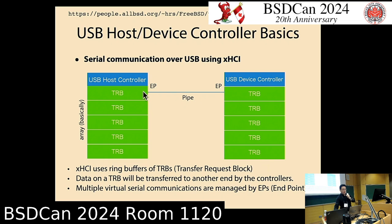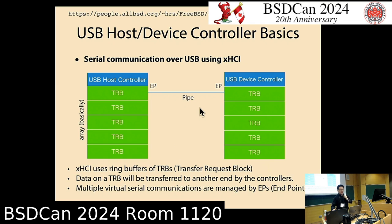Each endpoint is used to transfer data, and the connection is called a pipe in the USB specification. If two machines have multiple connections, you can have multiple virtual communications over a single USB connection. In that case, the host controller has multiple ring buffers, and you can establish multiple pipes between them.